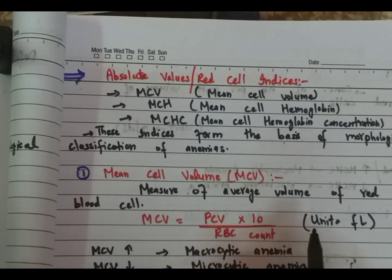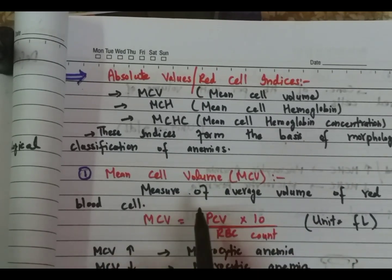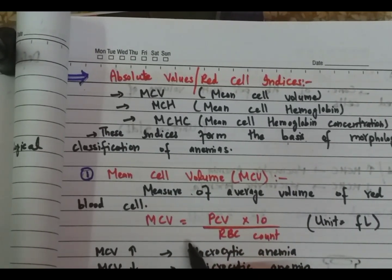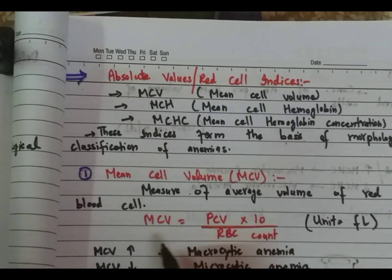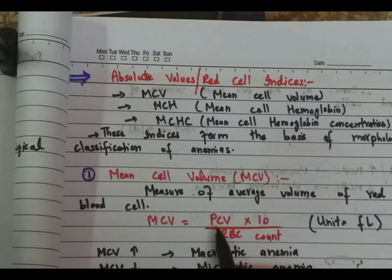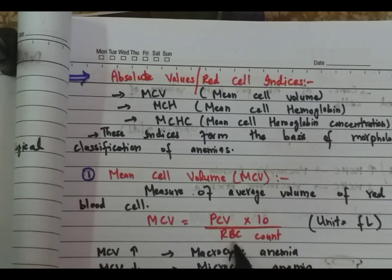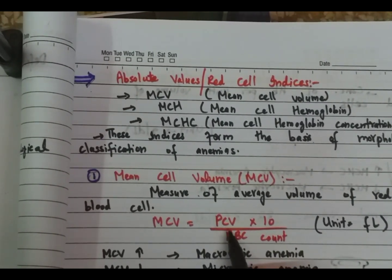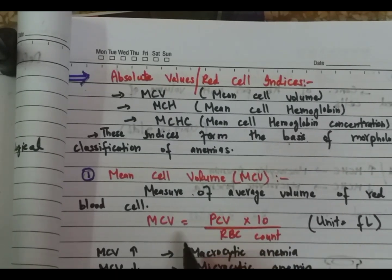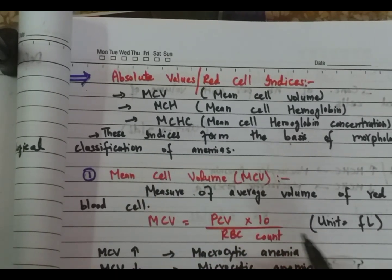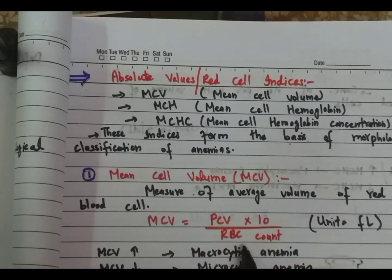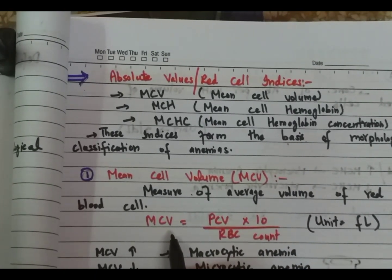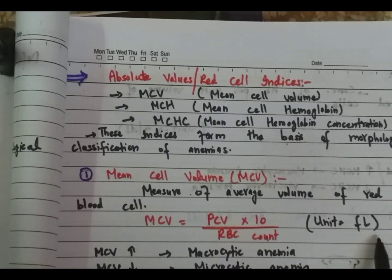Mean cell volume is the average volume of red blood cells. The formula is: mean cell volume equals packed cell volume divided by RBC count, multiplied by 10. The unit of mean cell volume is femtoliter.